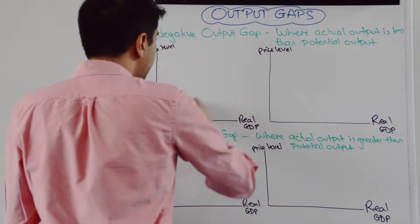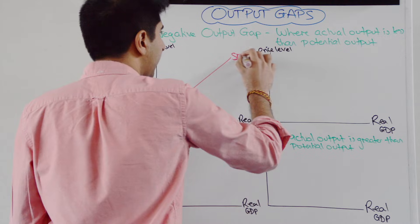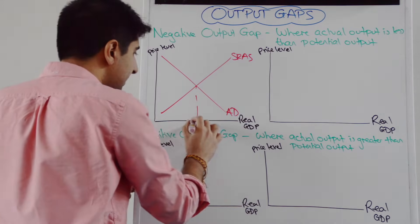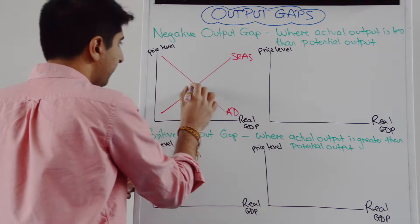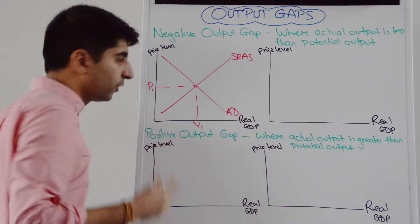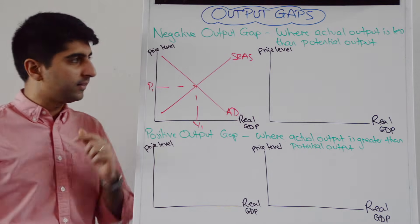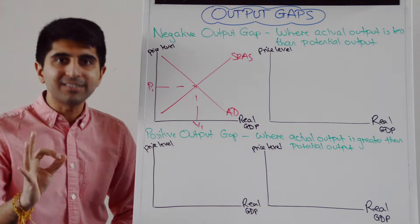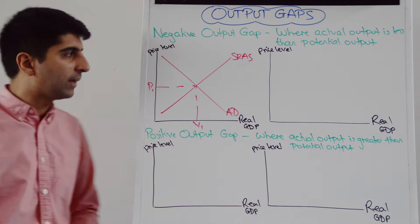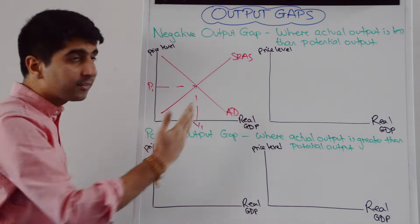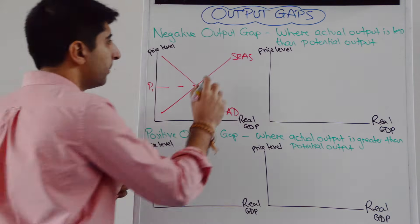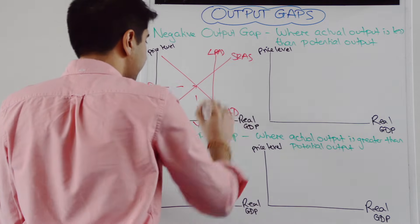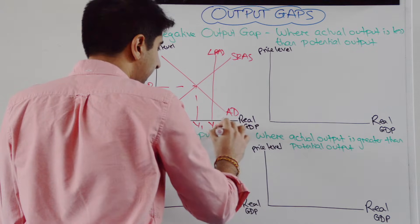On the classical model, let's draw AD and SRAS. So there's SRAS and there is AD. Now where they meet is the actual level of output, and that is at Y1 with a price level at P1. But crucially, that output level is going to be less than the potential level of output. So LRAS is going to be to the right of this equilibrium, over here somewhere. So there is LRAS and there is YFE.